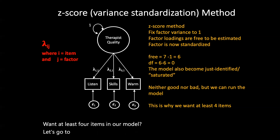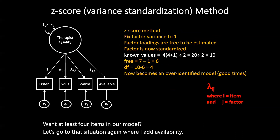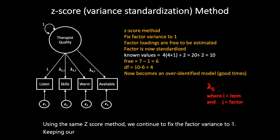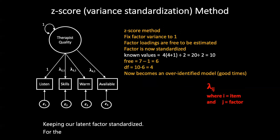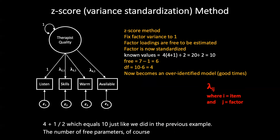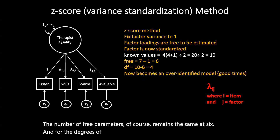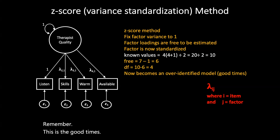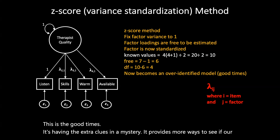With the Z-score method, we have six parameters because we fixed one of them — this time fixing the variance at one. When we calculate degrees of freedom, it's six minus six equals zero, which comes back to that just-identified model. This isn't necessarily good or bad; we can still run the model, but we have no extra degrees of freedom to assess how well the model fits our data — which is why we generally want at least four items. Adding that fourth item 'availability' and using the same Z-score method, our known values calculation gives ten, free parameters remain six, and degrees of freedom becomes ten minus six equals four — over-identified again, which is good times!